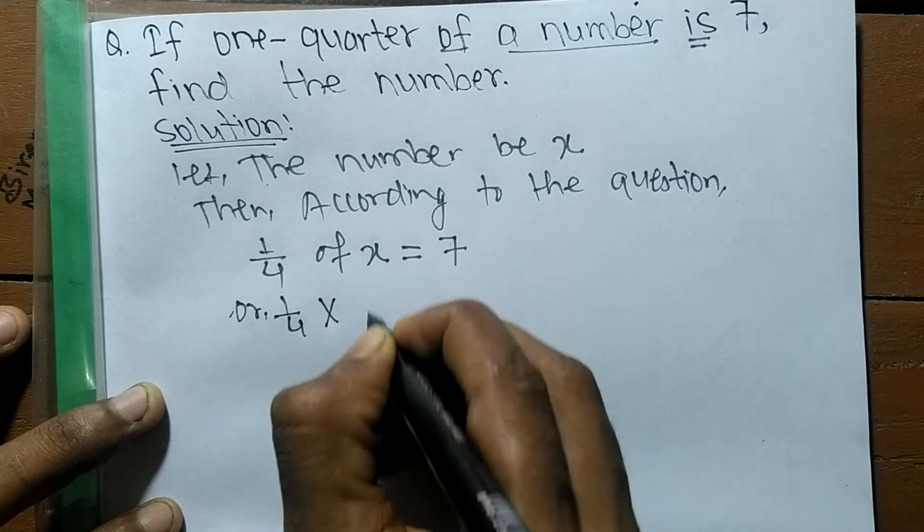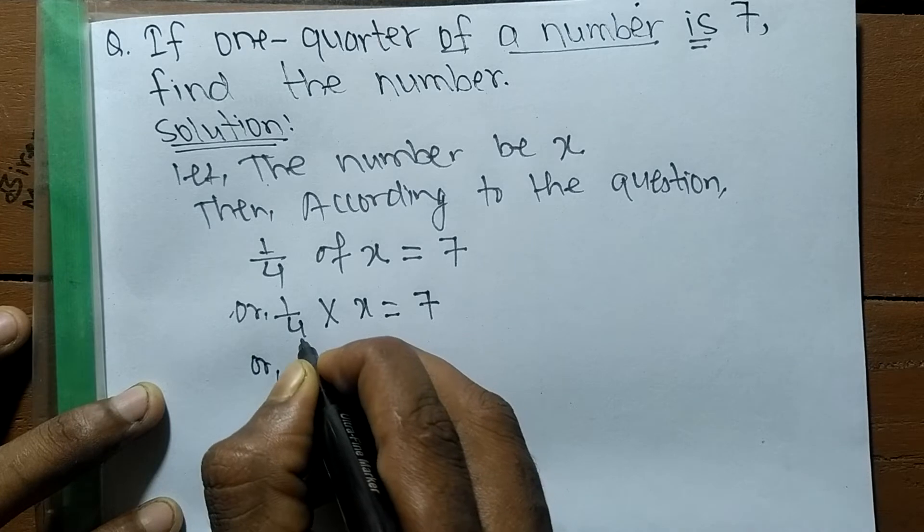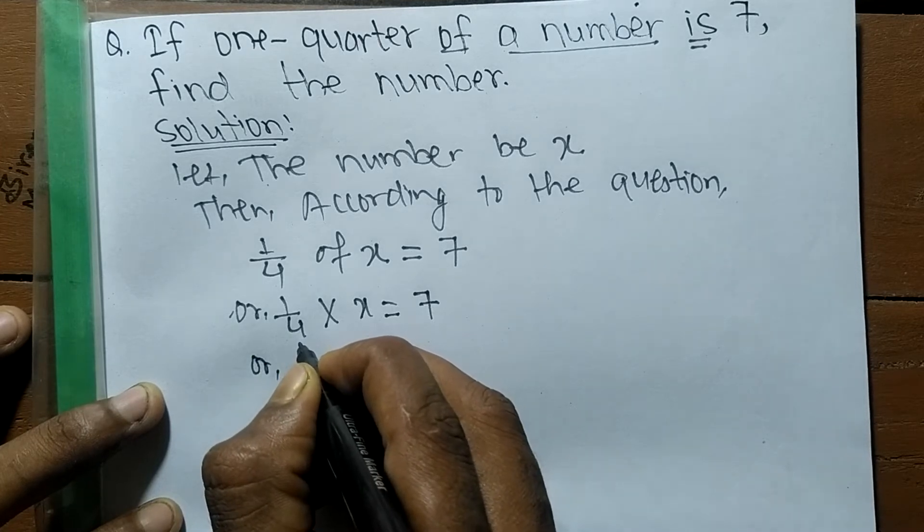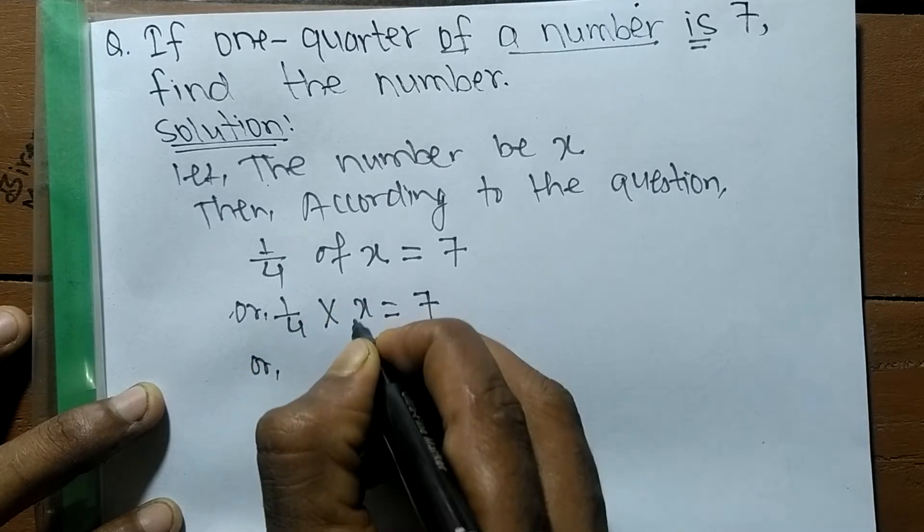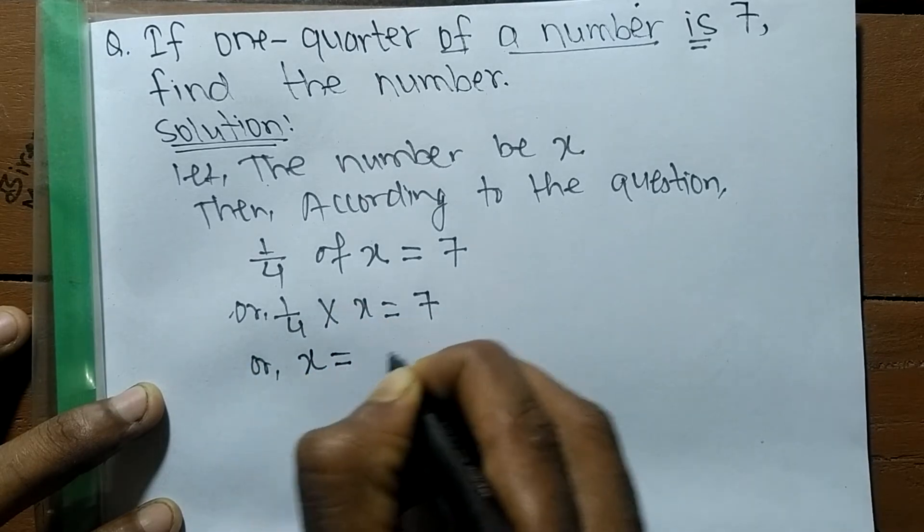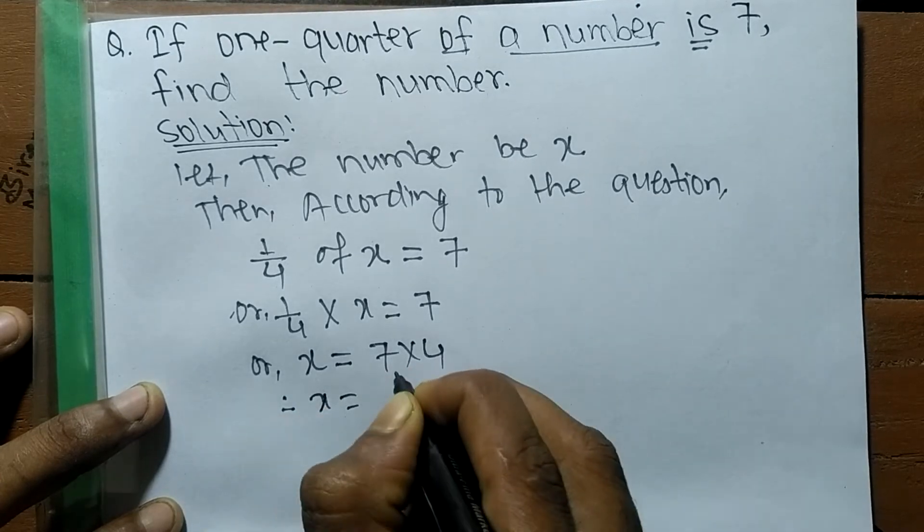As you look here, 4 is in the division side. When it moves to the opposite side, it becomes multiply. So 1 into X, which is X, is equal to 7 times 4.